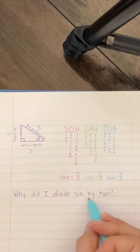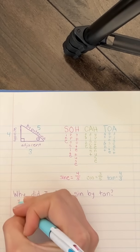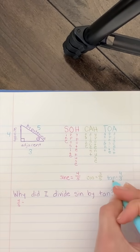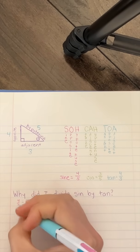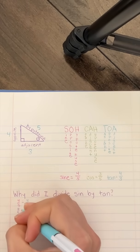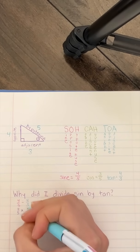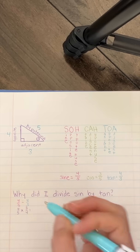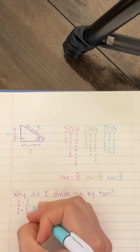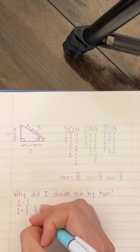Why did I divide sine by tan? Sine is 4 fifths divided by tangent, 4 thirds. To divide fractions, the first one stays, 4 over 5. Then you times, and then you flip the second one, 3 over 4. Multiply straight across, 4 times 3 is 12, 5 times 4 is 20.